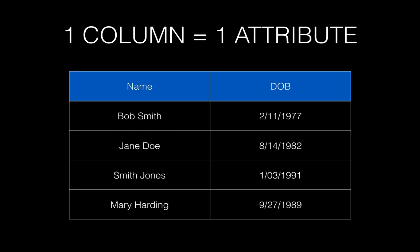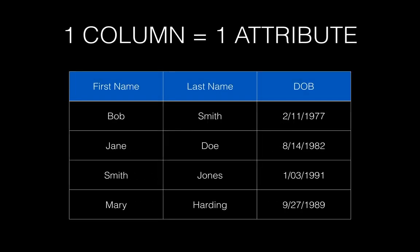One column provides us with a single attribute, meaning that each column contains data only about a single attribute of the thing we're describing. For example, if I have Bob Smith in the name column, I'm actually describing two things. Instead, we'll divide it up into two columns: a first name column and a last name column. Now say I wanted to search for anyone with the last name Smith — it becomes easier, because I can tell my database management system to search only the last name column for Smith, whereas we have someone whose first name is Smith. That wouldn't work if we only had one column.